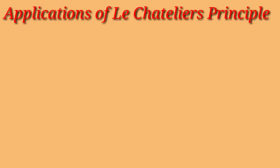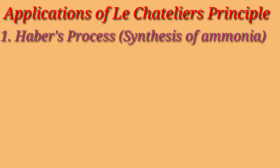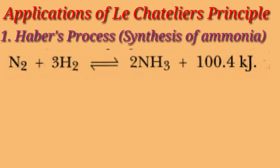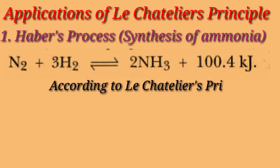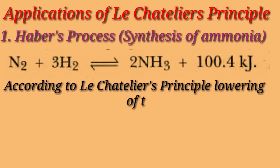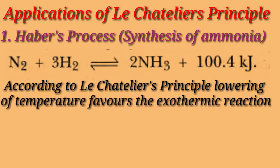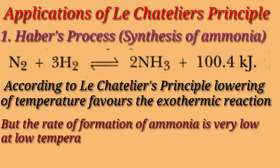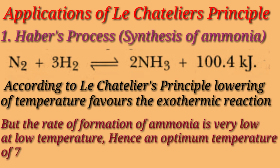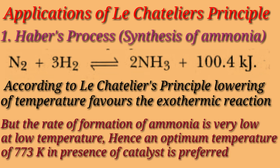Next, we shall study the application of Le Chatelier's principle. First is the synthesis of ammonia by Haber's process. This reaction is exothermic, meaning heat is given out. According to Le Chatelier's principle, lowering the temperature of this reaction will shift the equilibrium to the right side, yielding more amount of ammonia. But the rate of formation of ammonia is very low at low temperature. Hence, an optimum temperature of 773 Kelvin in the presence of a catalyst is preferred.